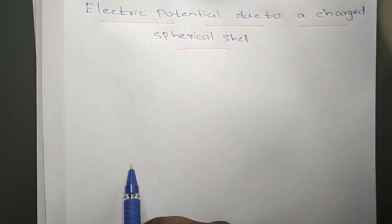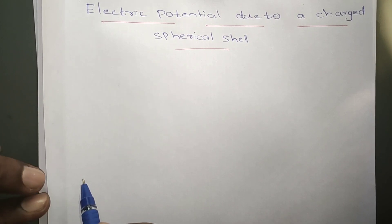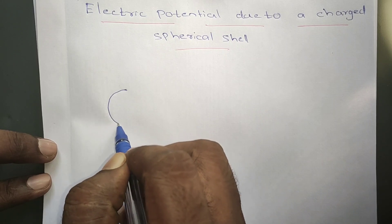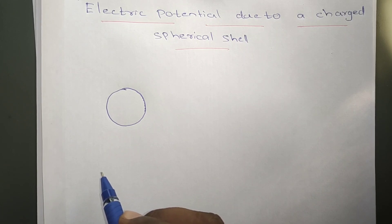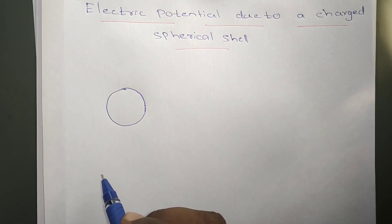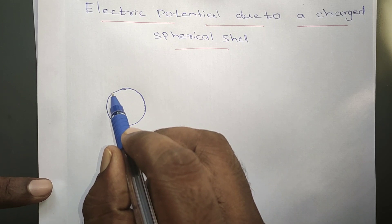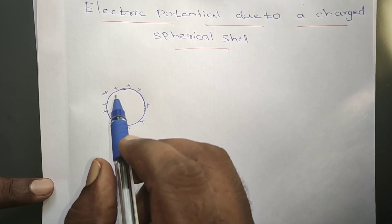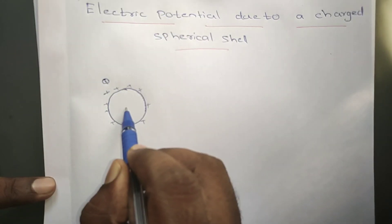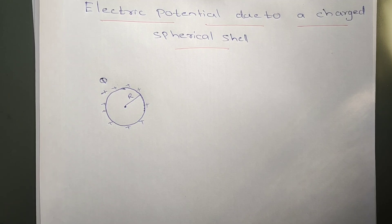Hello friends, welcome to my channel. In this video I am going to discuss electric potential due to a charged spherical shell. A spherical shell is like an egg shell — if the yolk inside is removed. We can also consider it like a tennis ball. The positive charges are distributed all over the sphere. The total charge is capital Q and the radius of the sphere is capital R.